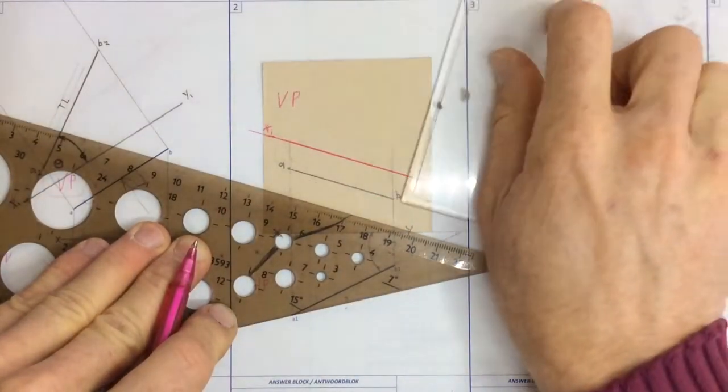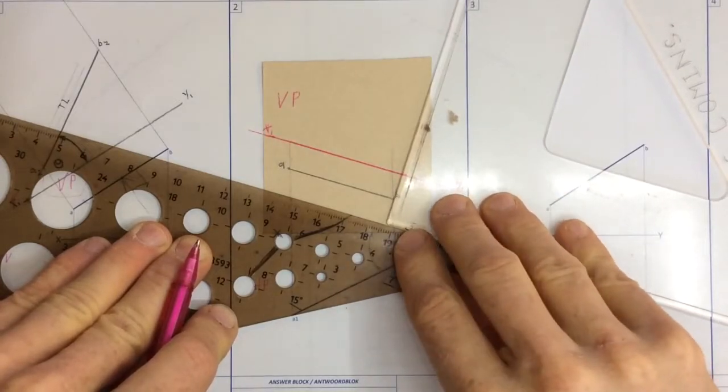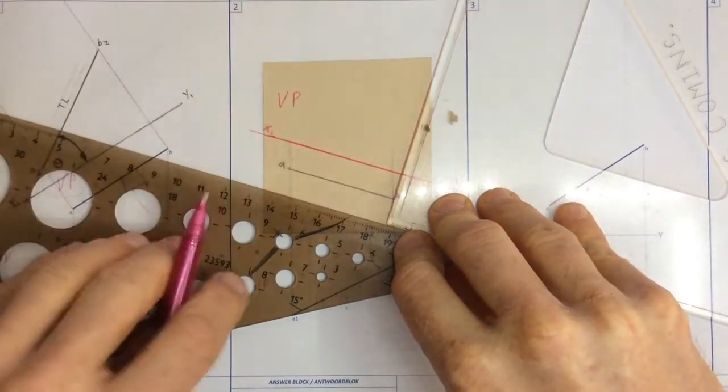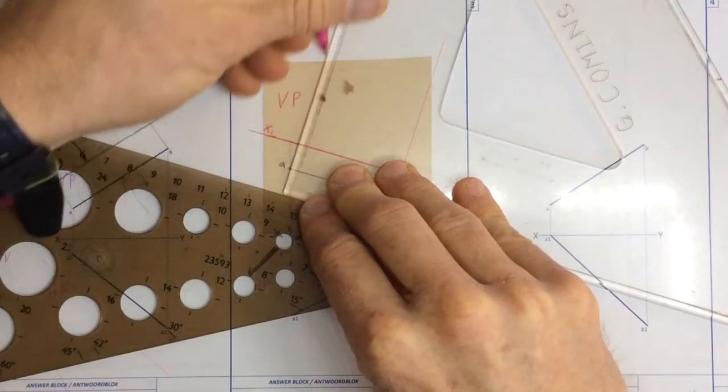I take my other set square around. I place it up against that set square, which I'm holding down very firmly. And I'm able to draw a construction line coming out from B. I go across to where A is. I take the construction line out.